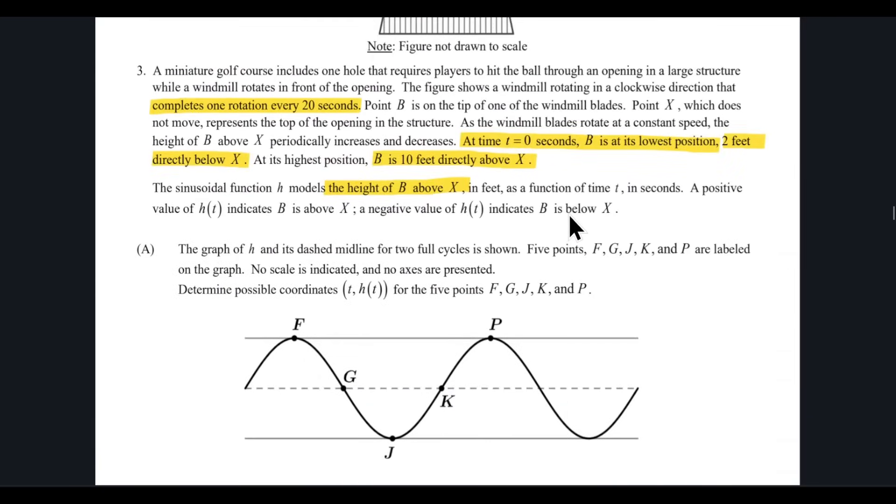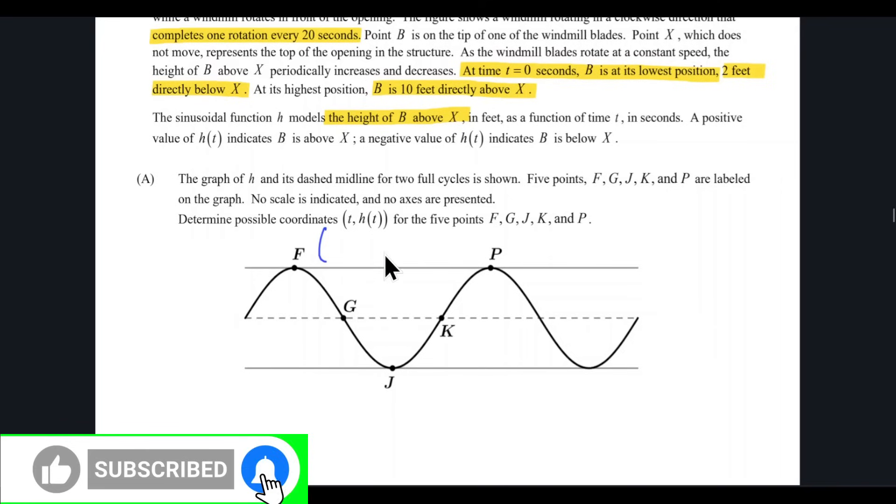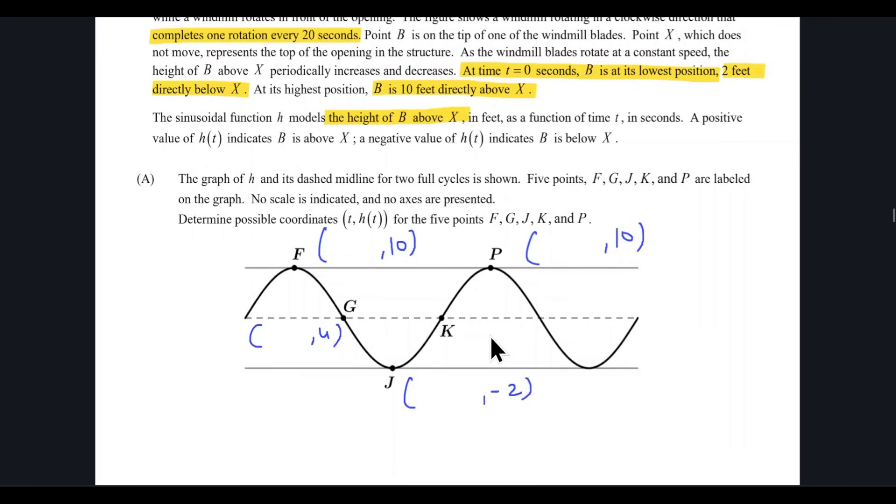Once again, I'm personally comfortable in writing y coordinates first. So I'm going to say that F is the maximum, having the y coordinate of 10. J is the minimum, something comma negative 2, and the mid is something comma 4, and then something comma 4 over here.